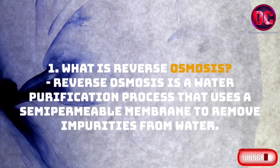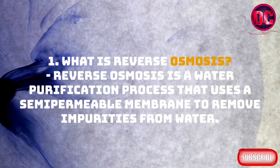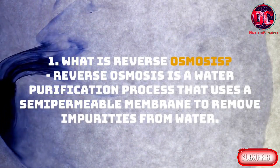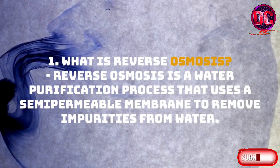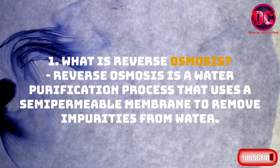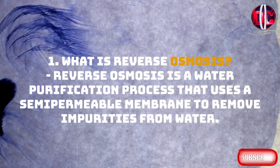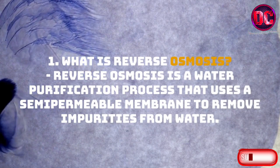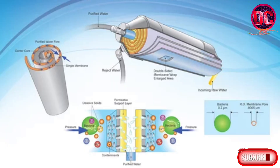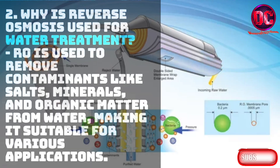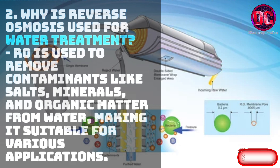1. What is reverse osmosis? Reverse osmosis is a water purification process that uses a semi-permeable membrane to remove impurities from water. 2. Why is reverse osmosis used for water treatment? RO is used to remove contaminants like salts, minerals, and organic matter from water, making it suitable for various applications.